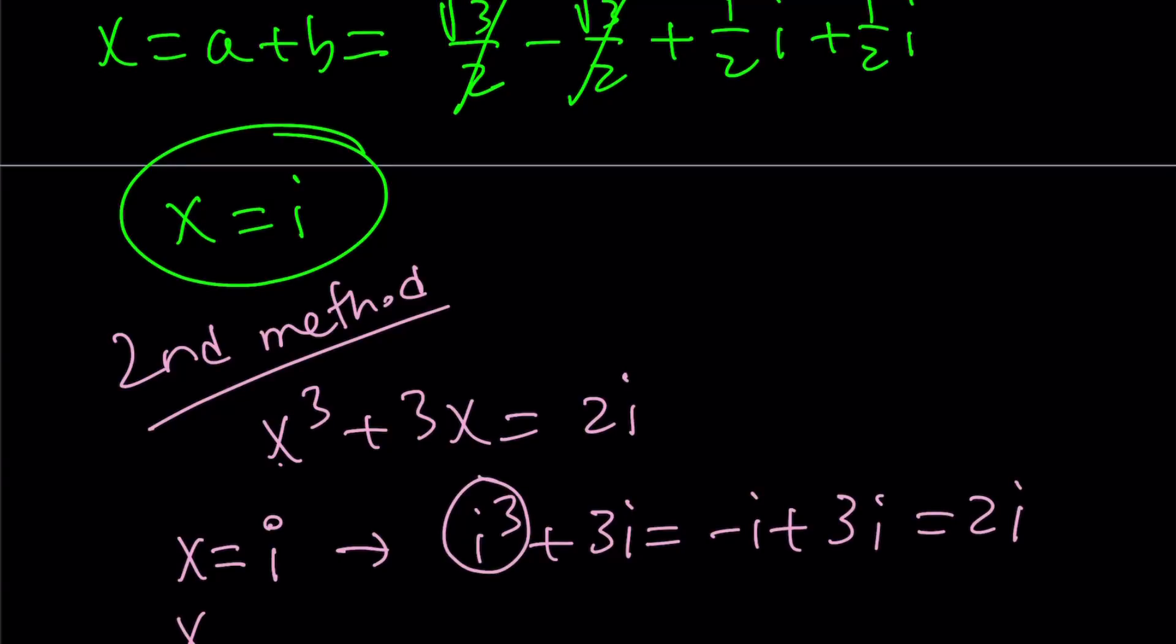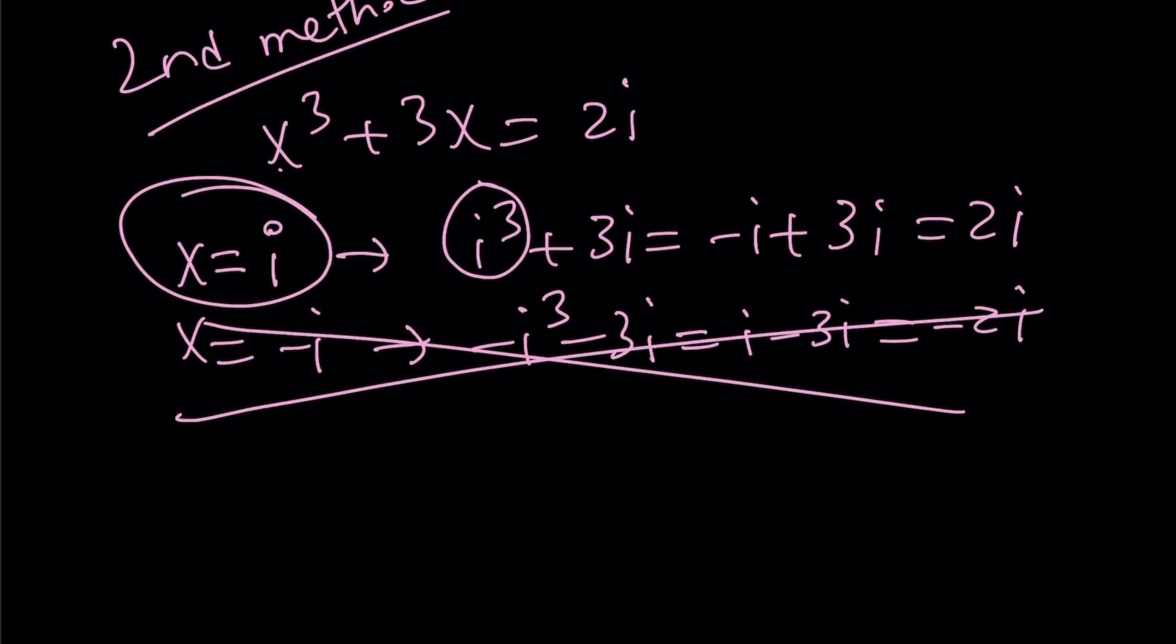How about x equals negative i? If you cube negative i, you're going to get negative i cubed and minus 3i, and that's just going to be i minus 3i, but that's just going to be negative 2i. So x equals negative i is not going to work, but x equals i is going to work, so that's one of the solutions, just like we found in the first solution. But how do you find the other solutions?